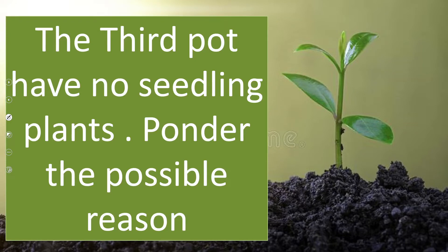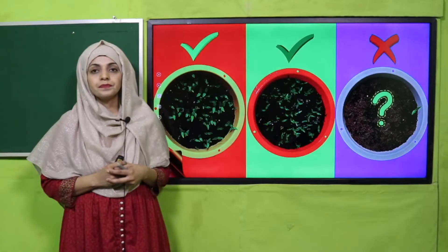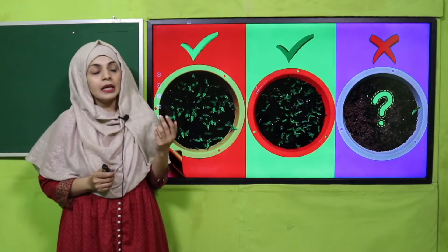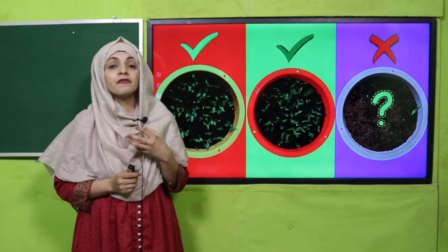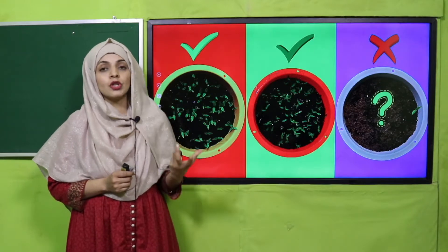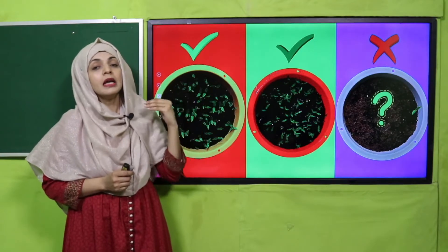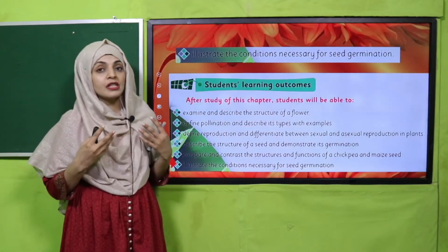My dear students, let's quickly recap what we did in the previous lecture. There were three pots, and in all three, seedlings were supposed to grow. But the third pot is empty — what could be the reason? The possible reason is either there were no seeds, or the seeds did not get the feasible conditions necessary for germination. So no small plant appeared there. Today we will discuss which important conditions are needed for a seed to germinate.